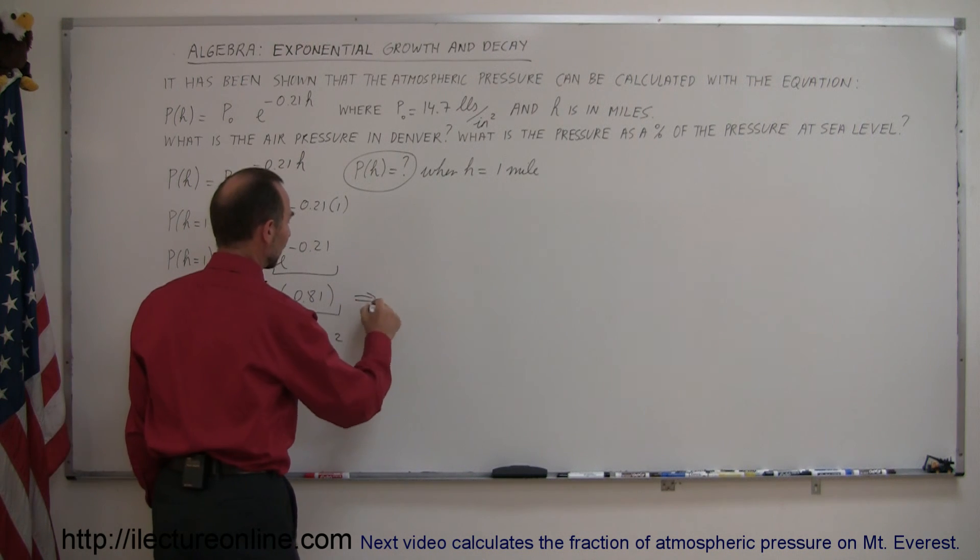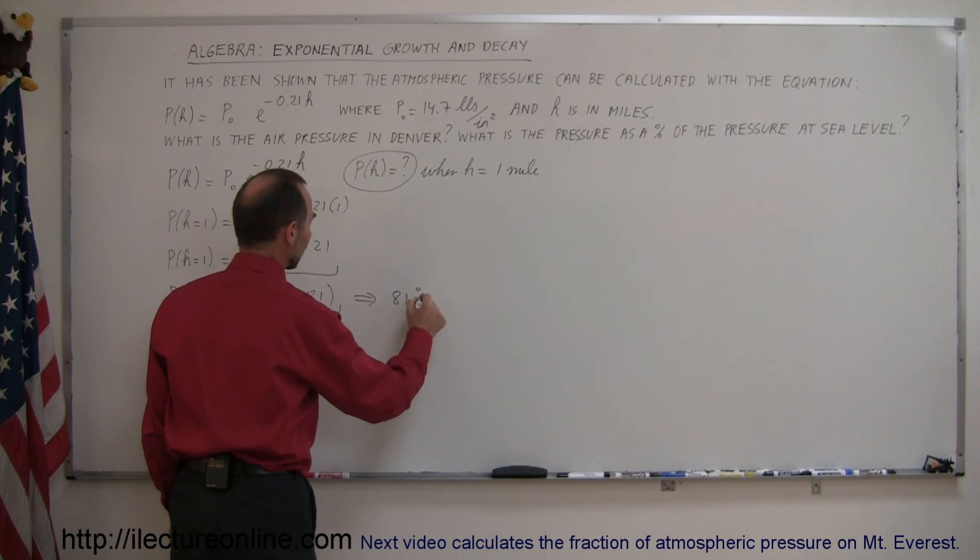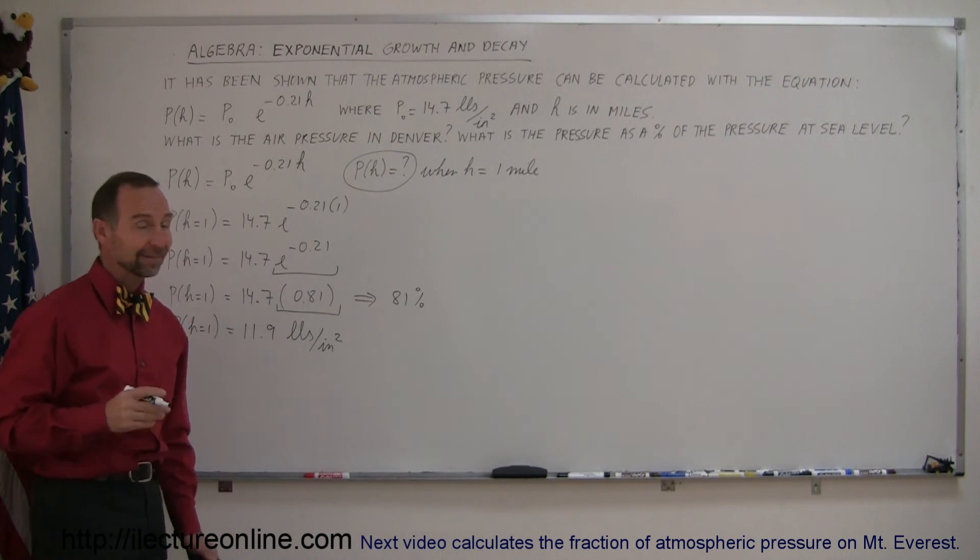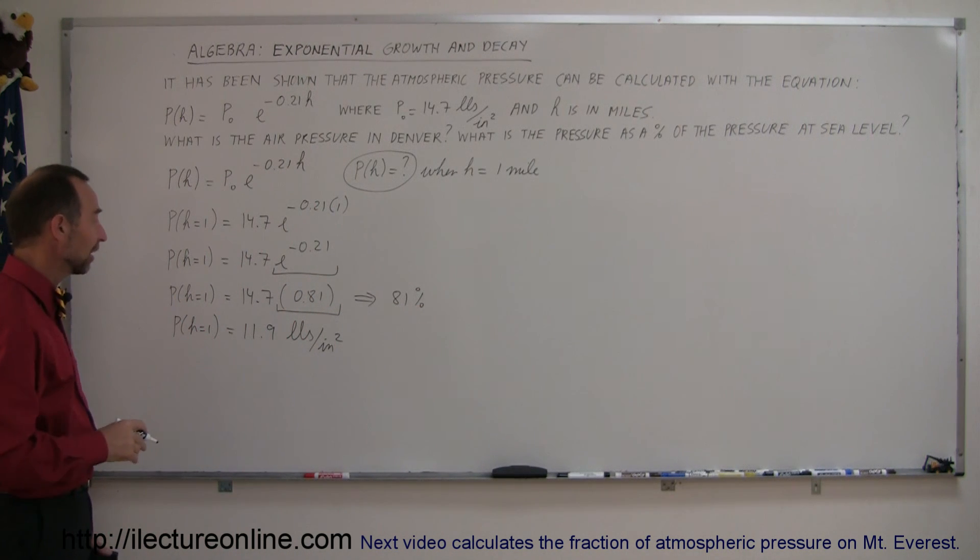So simply put, that is 81 percent. So the air pressure in Denver is 81 percent of what it is at sea level. That comes right out of the equation.